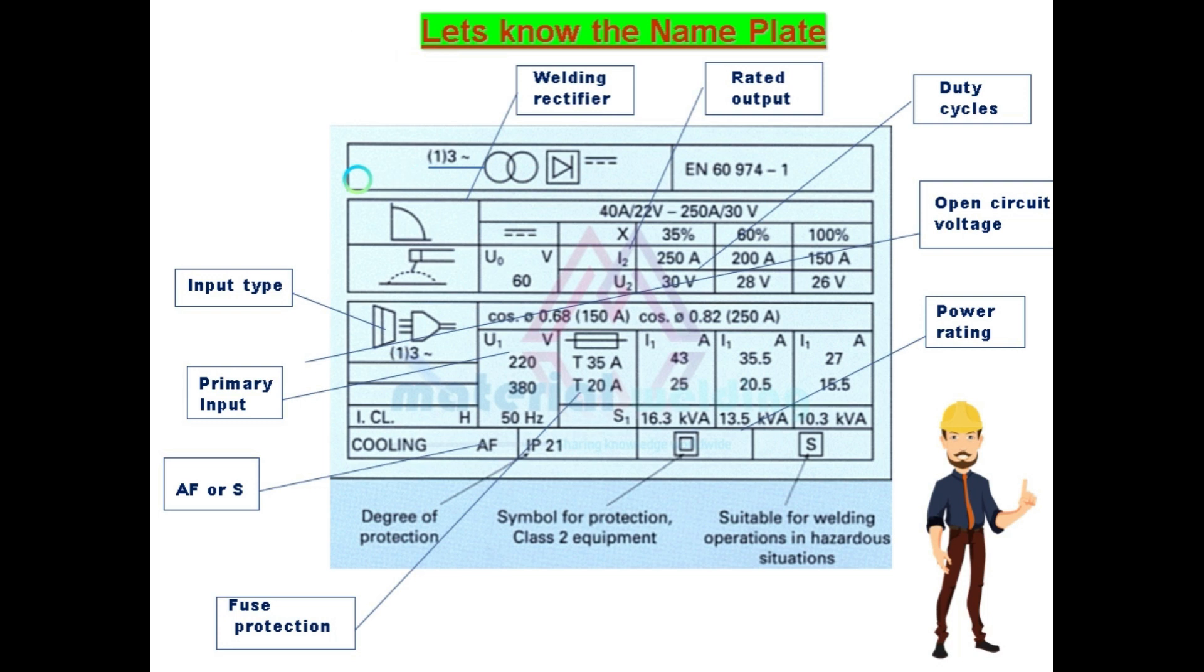So this is the symbol of the welding power source type. This is a rectifier base. Either single phase or a three phase input is given, and we have a transformer, and we have a rectifying device, and at output we have direct current.